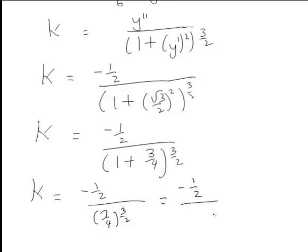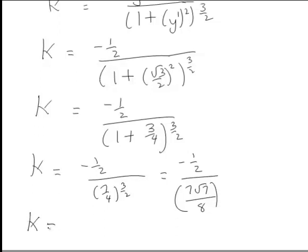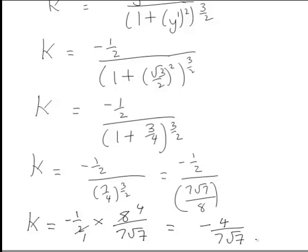Now 7 to the power of 3 on 2 is just 7√7, and 4 to the power of 3 on 2 is 8. So the expression becomes negative 1/2 divided by 7√7/8, which simplifies to negative 1/2 multiplied by 8 divided by 7√7. The 8 and the 2 cancel down to give 4, so the curvature equals negative 4 divided by 7√7.